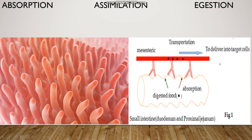The large intestine has no role in digestion of food materials. Its function is to absorb water. The undigested waste materials are then eliminated out through the anus. That is all you have to learn in this chapter on nutrition.